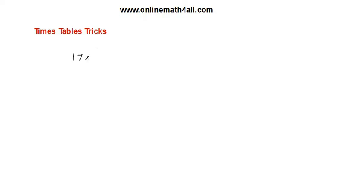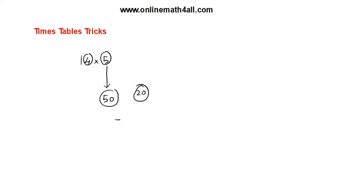Let us look at another example: 14 times 5. Step 1: take the one-digit number 5 and make it 50. Step 2: multiply the digit in the ones place, which is 4, by 5. So 5 times 4 is 20. Add 50 and 20 to get 70. So 14 times 5 is equal to 70.